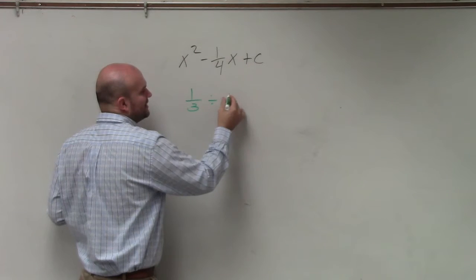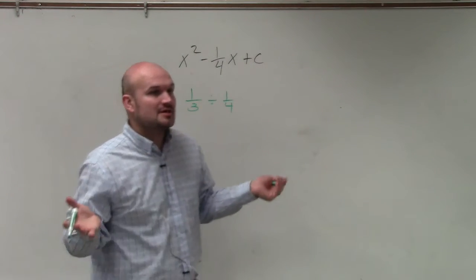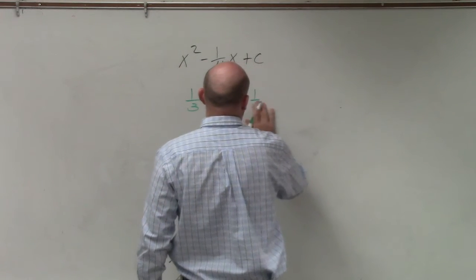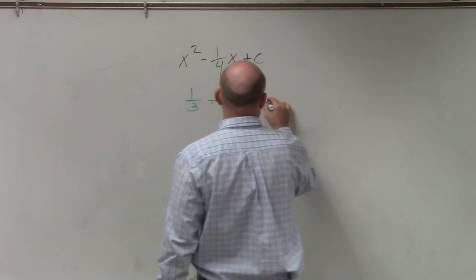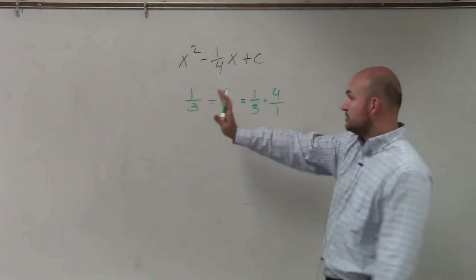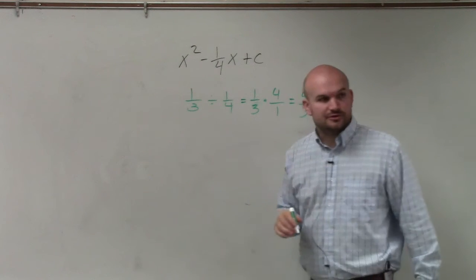One third divided by, I don't know, one fourth. We say, how do we divide fractions? Well, rather than dividing fractions, we replace that by saying one third divided by one fourth is the same thing as multiplying by the reciprocal. And when you multiply, you always multiply straight across. Do not do cross multiplication.